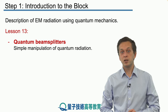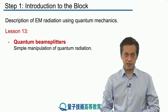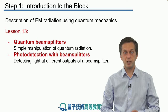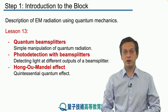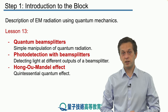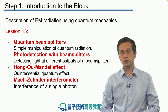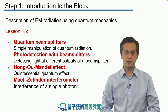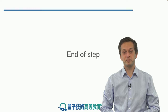In lesson 13, we're going to apply what we have learned to quantum beam splitters. Beam splitters are a very basic and ubiquitous way of manipulating quantum light. We will develop formalism to describe them and immediately apply it to photo detection with beam splitters, and in particular the Hong-Ou-Mandel effect, an extremely important effect in quantum optics and quantum communication. We will conclude lesson 13 by discussing interference of a single photon using the Mach-Zehnder interferometer. So, let's begin.